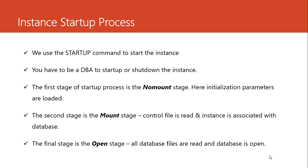We go through a process to start up the instance or the database, and there are three stages. The first stage is the no mount stage. At this stage the database is down and not accessible — we are assuming the instance is shut down and we are trying to bring it to life. What happens at the no mount stage is the initialization parameter files are loaded into the system. These are the settings of the database, and they are read at this stage. When the initialization parameters are read, then the background processes start — the mandatory ones we saw. Memory is also allocated, the SGA components. So memory and background processes are loaded at the no mount stage.